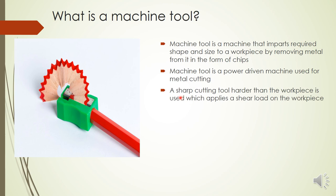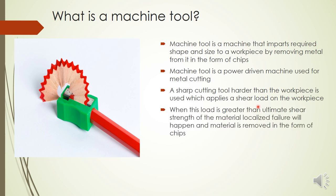A machine tool uses a sharp cutting tool harder than the workpiece, which applies a shear load on the workpiece. The cutting tool is normally made of high speed steel, which is much harder than the mild steel workpiece. When the applied load exceeds the ultimate shear strength of the material, localized failure occurs and the material is removed in the form of chips. That is the principle behind every machine tool.